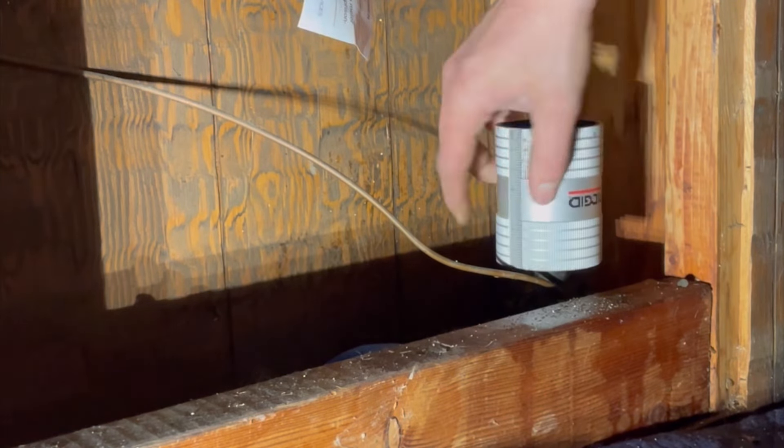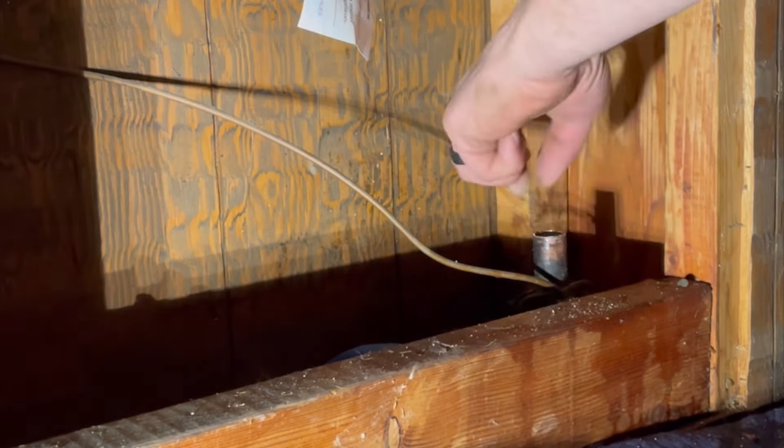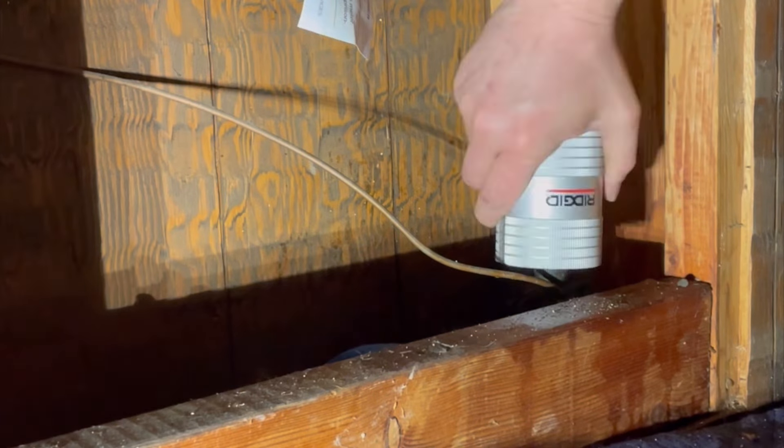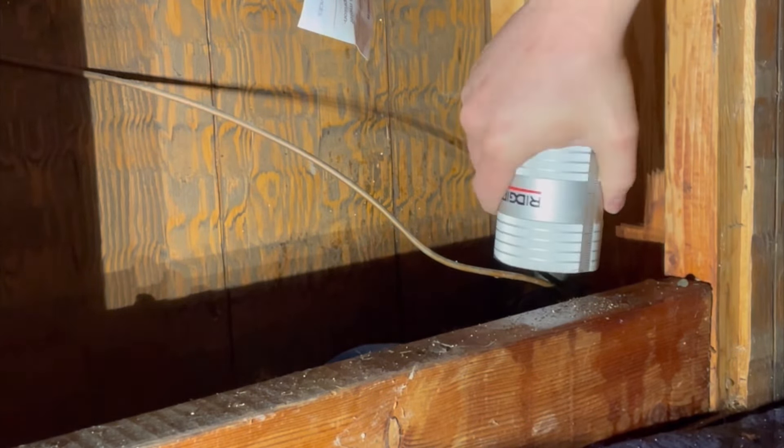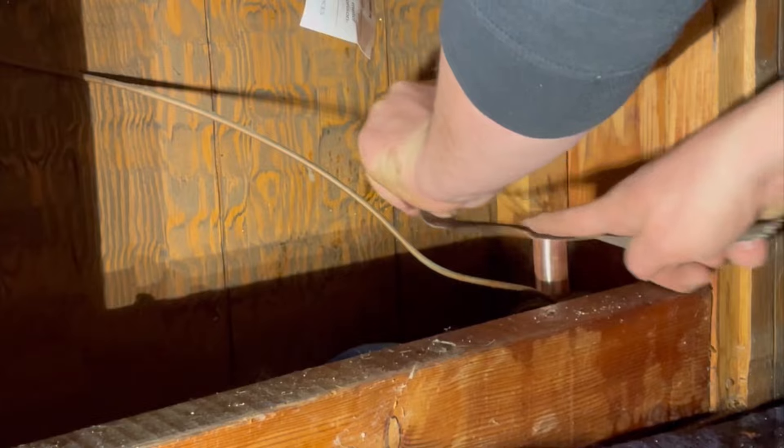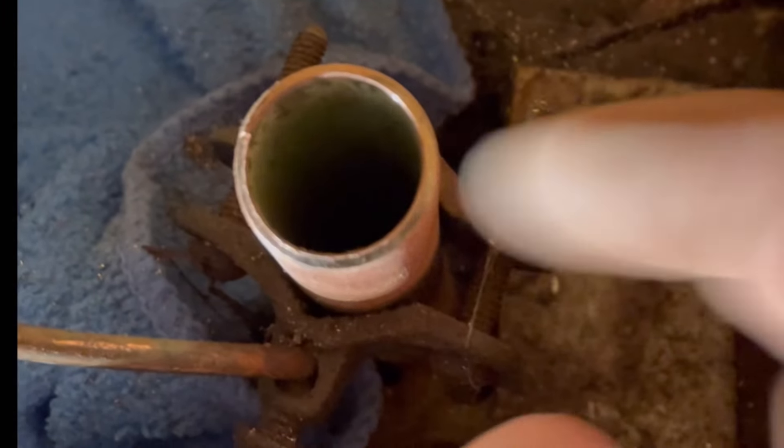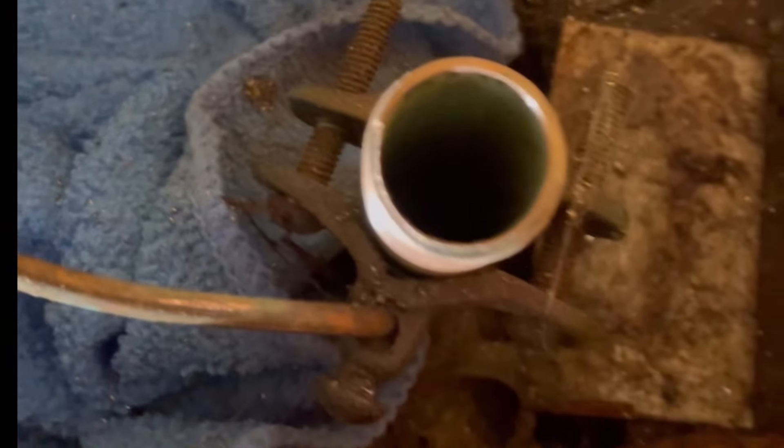So as I cleaned up this pipe, you can see that the difference in the wall thickness from that paper thin that I was moving with my screwdriver to the actual wall thickness of the K copper. I only cut it down a couple inches lower and you can see here the difference.